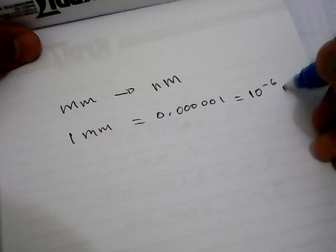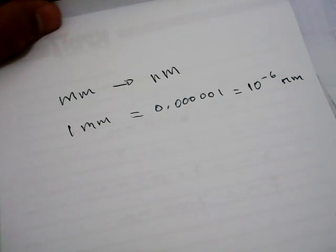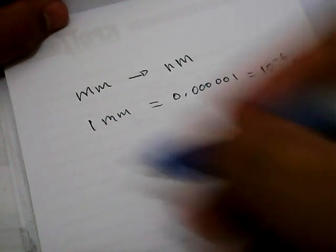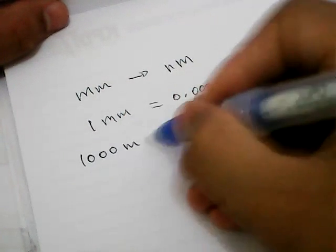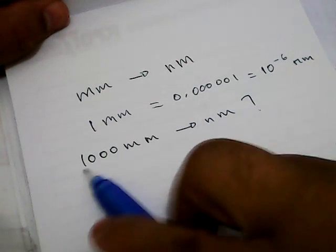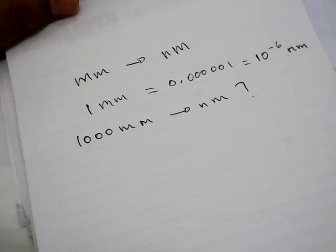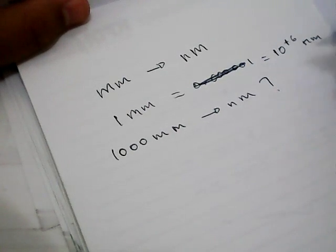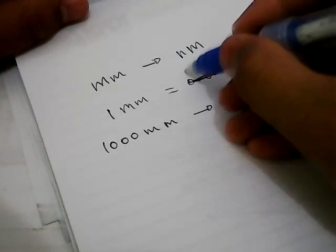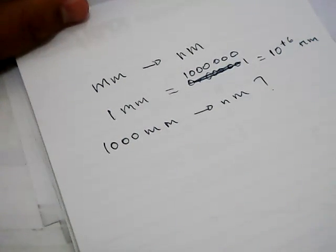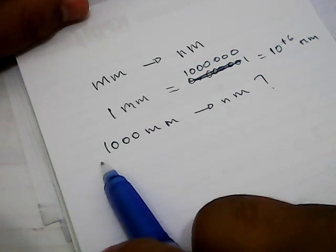Okay, nanometers. Well, for example, I want to convert 1,000 millimeters into nanometers. Well, I'm sorry, it's actually 10 power 6, and this number is one million. I'm really sorry for this. Well, I want to convert 1,000 millimeters into nanometers.